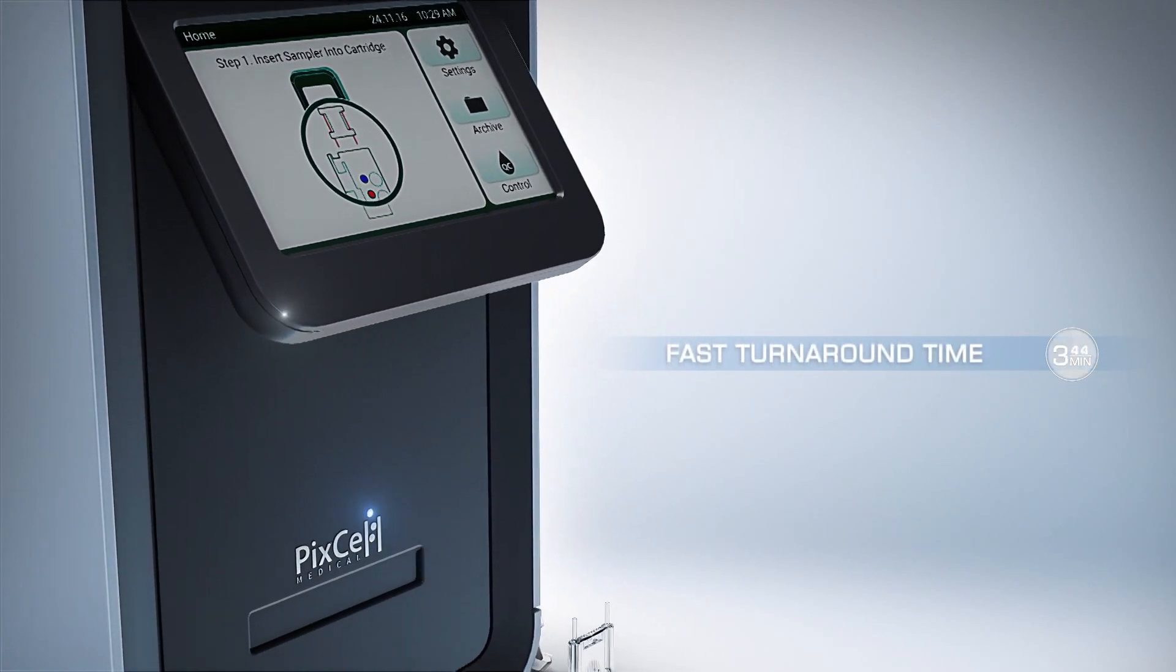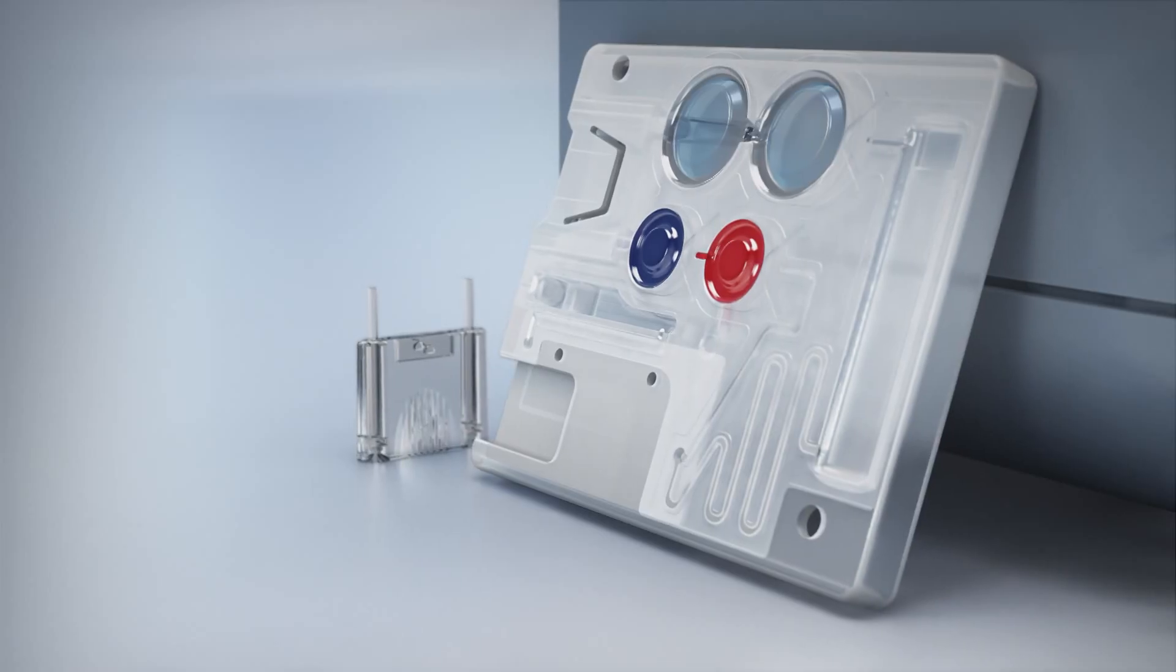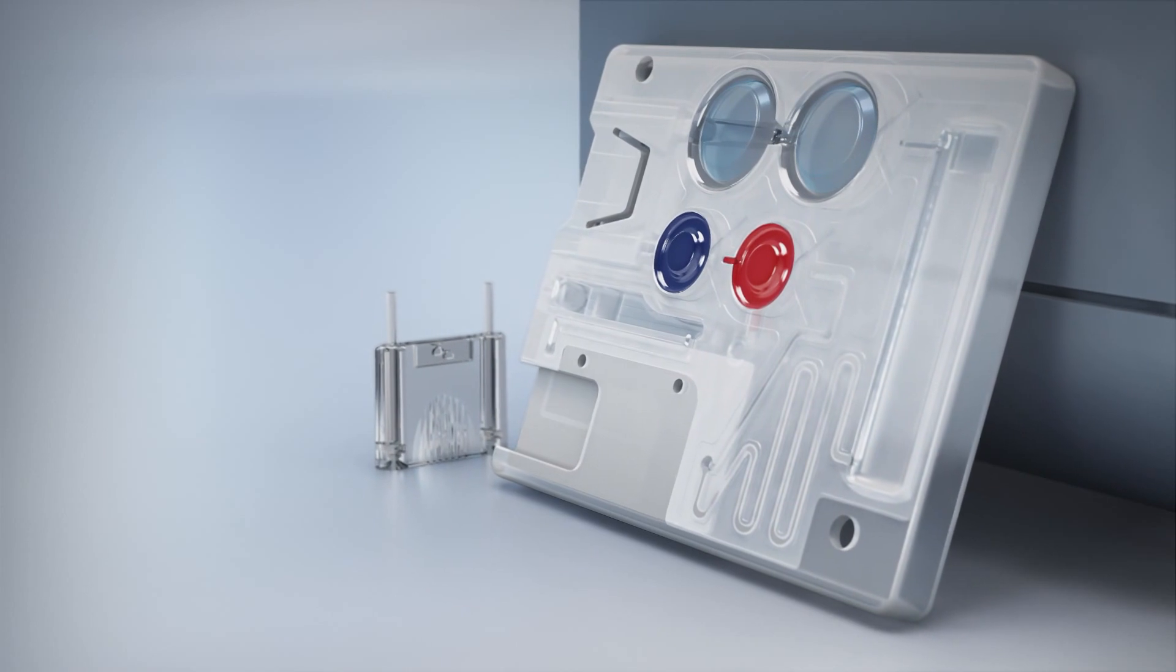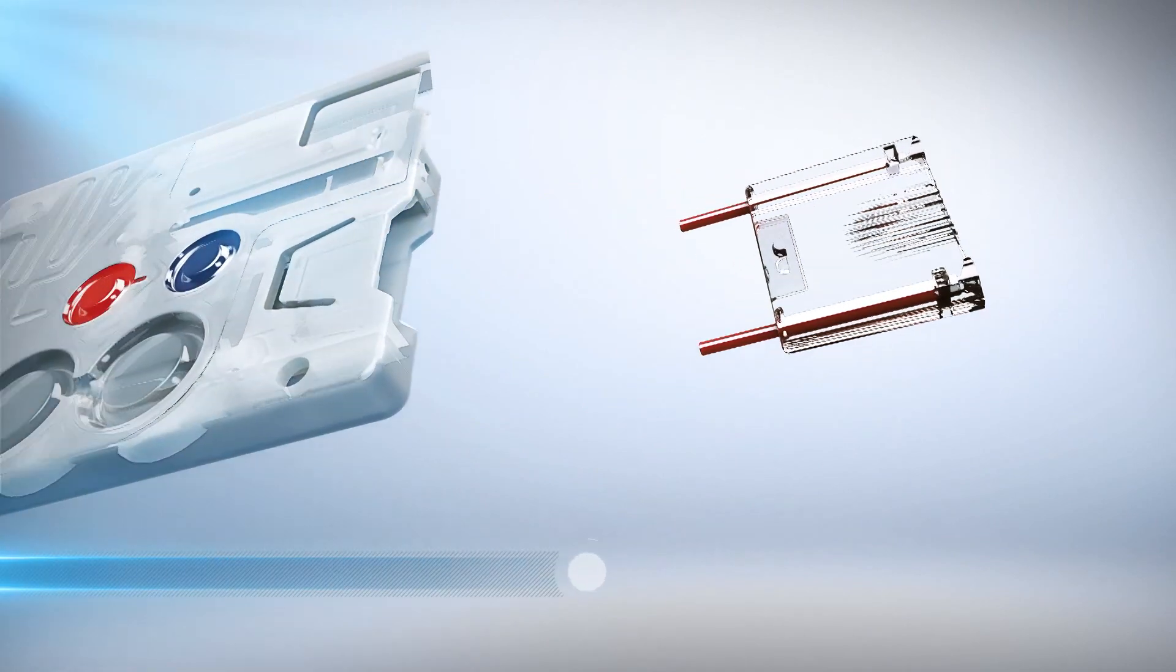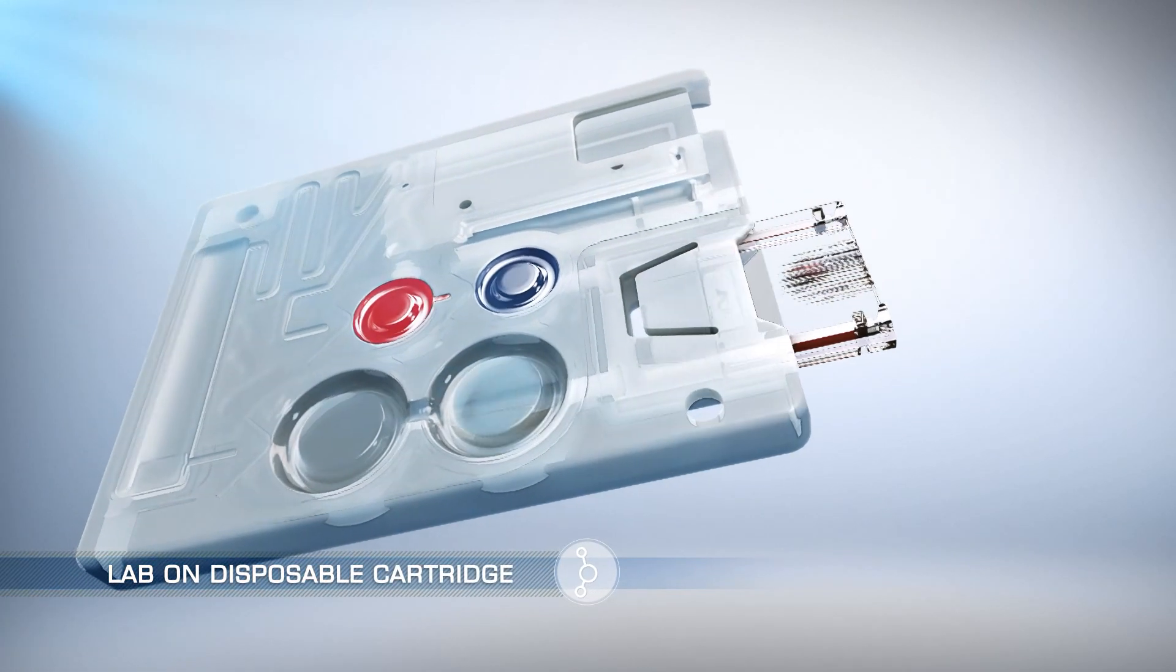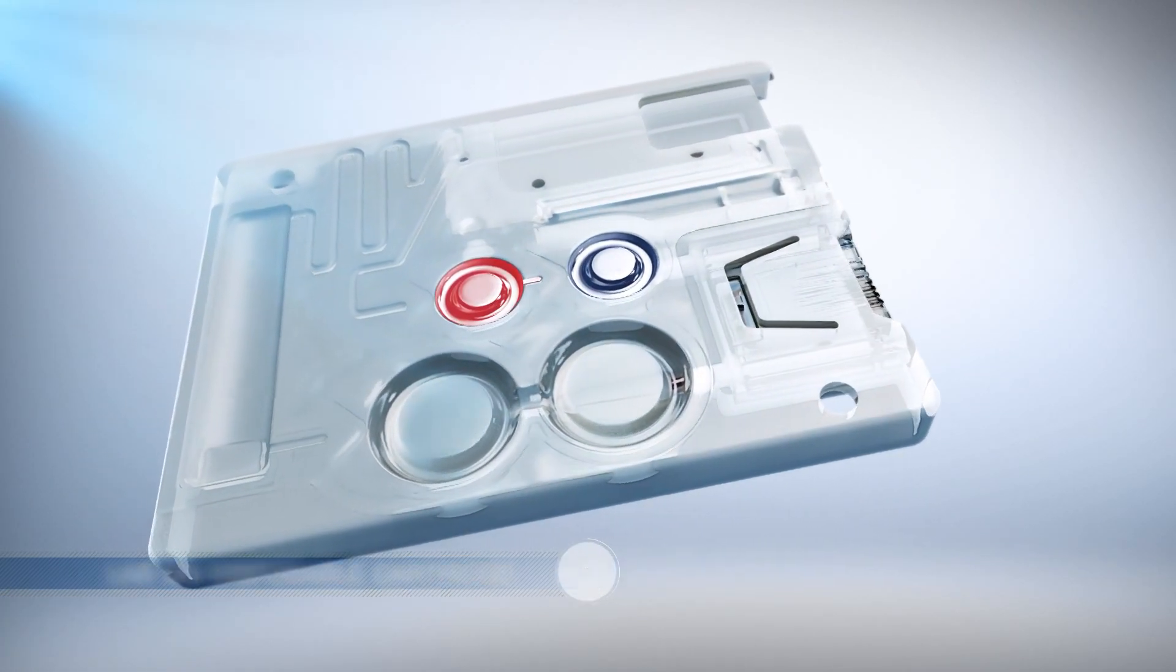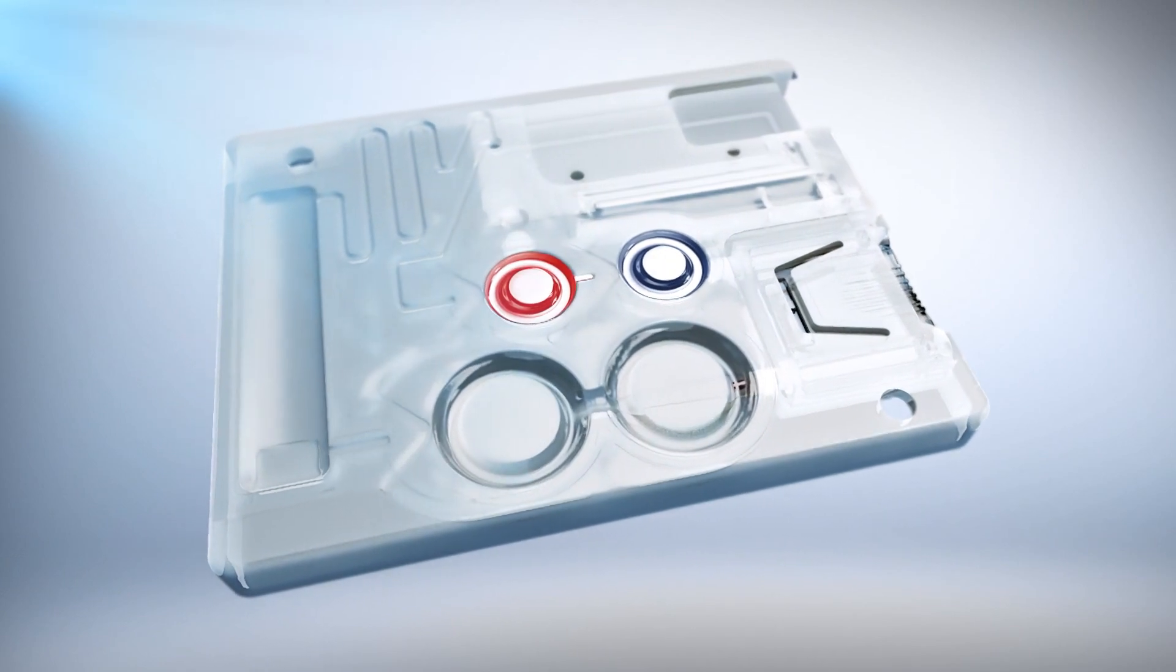Hemoscreen reader provides immediate results within five minutes, designed specifically to save time and operating costs. The reader uses a disposable cartridge ensuring ease of use and preventing any cross contamination. No calibration or maintenance is required.